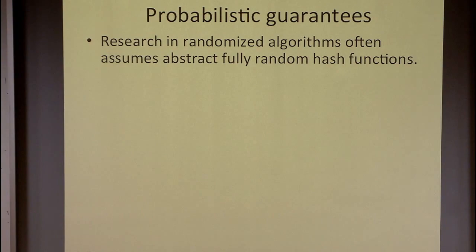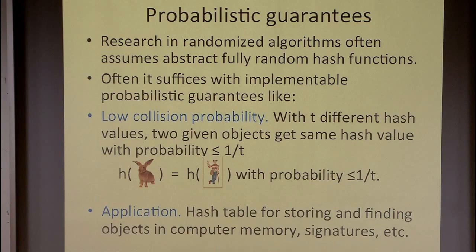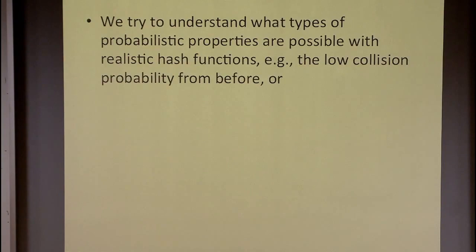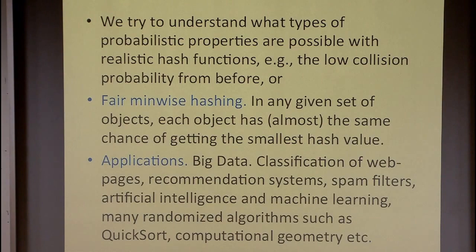When we work with these randomized algorithms, we often assume we have these wonderful fully random hash functions, and the only problem is that they don't exist. But often it suffices with something more limited that we actually can guarantee — like what we saw before: low collision probability, where with T different hash values, the probability that two things get the same value is one over T. That's used for storing and finding objects in computer memory, signatures, and many other things. The interesting question is what other probabilistic guarantees are we actually able to get with these hash functions, since we can't do the perfect thing?